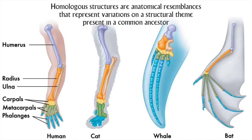One example of homology is the arrangement of bones in the forelimb — what we might call the arm. You have in your arm a series of bones: the humerus, the ulna and radius, the carpals, metacarpals, and phalanges, all in that order. This same arrangement of bones is found in most terrestrial vertebrates and all mammals. Why do we share this same arrangement of forelimb bones? Because that is the arrangement found in our shared common ancestor. Cats, whales, and bats have these bones, but they all use them for different purposes.